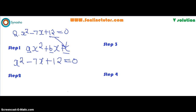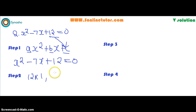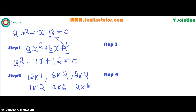The second step is to find out the factors of 12. What are the possible factors of 12? The possible factor pairs of 12 are: 12 times 1, 6 times 2, and 3 times 4. You can also write the vice versa: 1 times 12, 2 times 6, and 4 times 3.